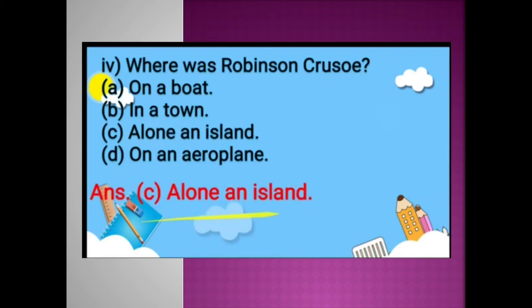Next: Where was Robinson Crusoe? Option A: on a boat; option B: in a town; option C: alone on an island; option D: on an airplane. Yes, he was alone on an island.